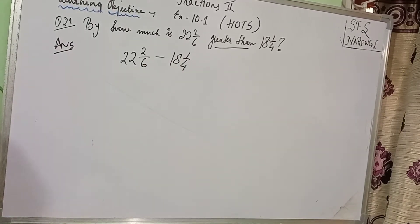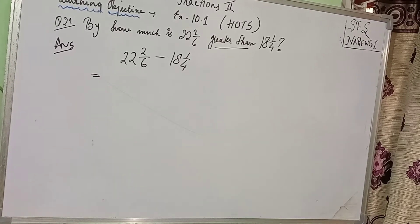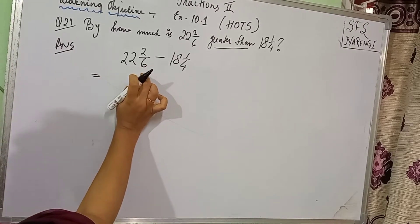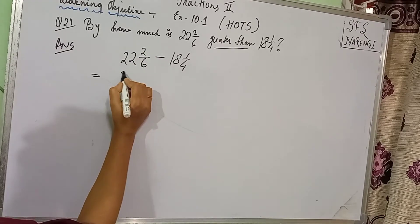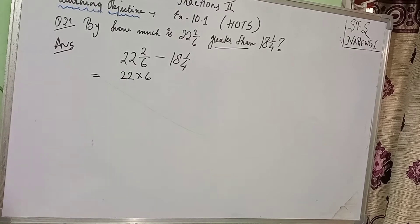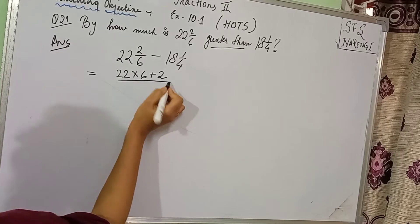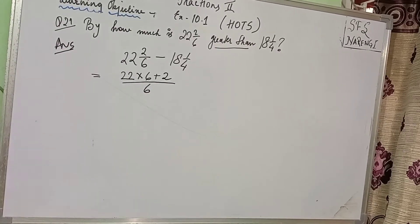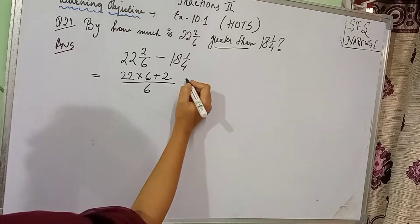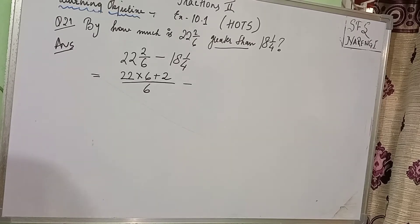Now since they are mixed fractions, what is the first step to be done? You convert them into improper fractions. How? Multiply the whole number with the denominator, then add it with the numerator. Here I will do 22 multiplied by 6, because 22 is the whole number — multiply it with the denominator, then add 2, and group everything under the same denominator. Now for the next part, 18 1/4 is a mixed fraction — convert it into improper fraction.